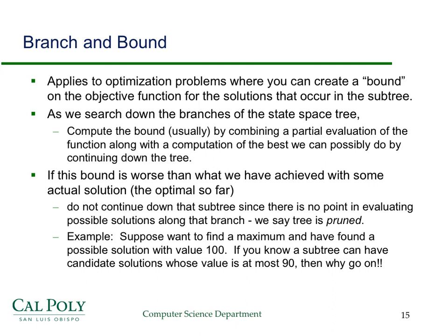That's pretty abstract. Let's think about a simple example. Suppose you have a state space tree and you're trying to find the maximum, and you've already found a possible solution with a value of 100. If you know that the subtree you're working on can only have candidate solutions whose value is at most 90, then there's no point in searching further down the tree because anything less than or equal to 90 could not possibly be the optimal solution.